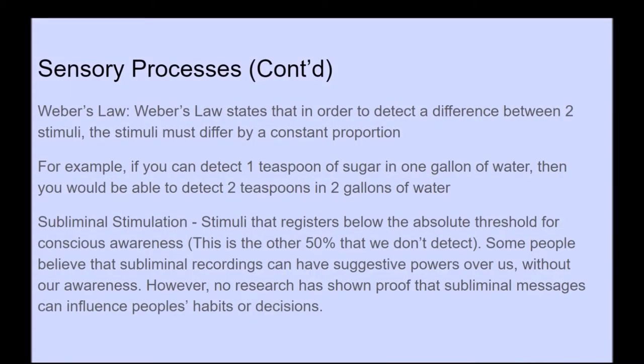We also want to get into Weber's Law, which states that in order to detect the difference between two stimuli, the stimuli must differ by a constant proportion. For example, if you can detect one teaspoon of sugar in one gallon of water, then you would also be able to detect two teaspoons of sugar in two gallons of water.